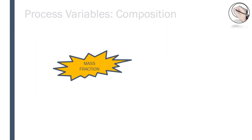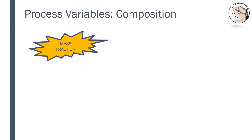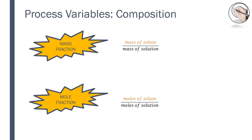Some people refer to mass fractions as concentration, but I like to call mass fractions and mole fractions compositions. They directly tell us what a mixture is composed of, and all the components add up to a fraction of 1 or 100%. A mass fraction is usually denoted with an x, and a mole fraction is denoted with a y. Some engineers denote mass fractions with a w and mole fractions with an x.